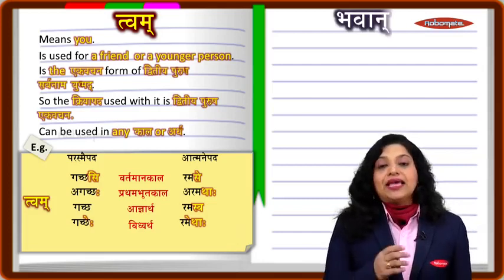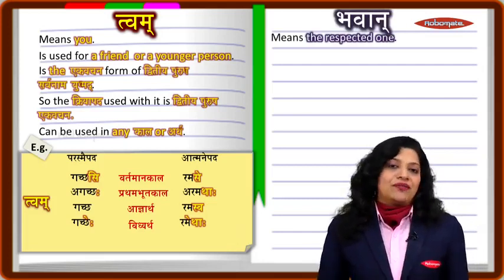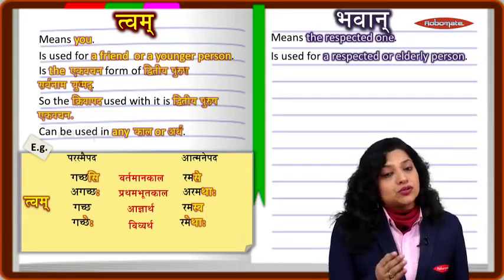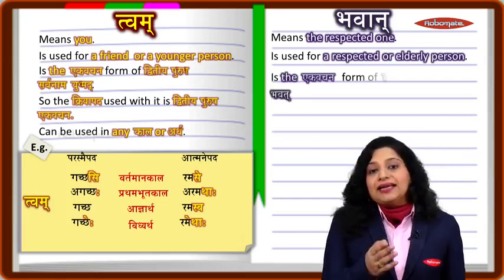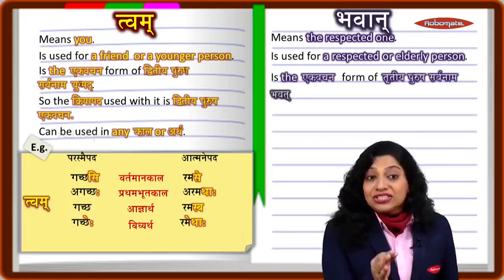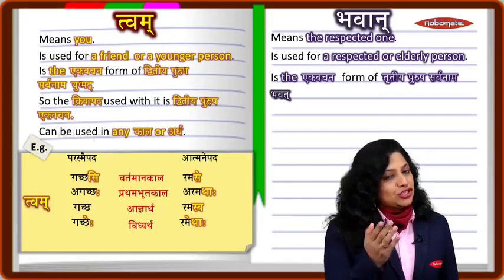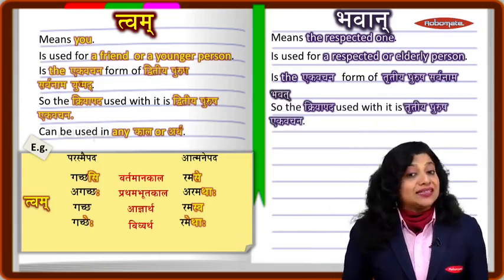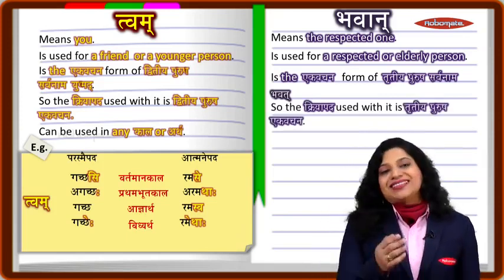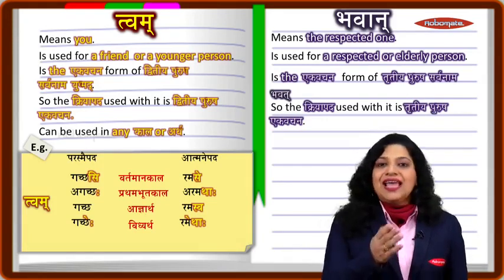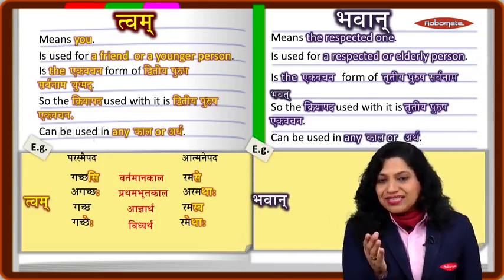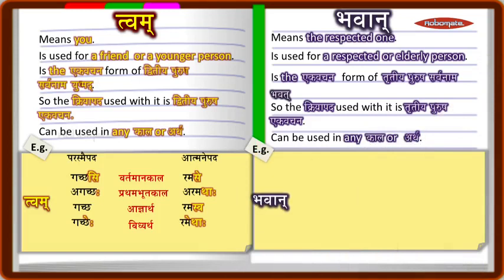'Bhavan' also means 'you' but refers to the respected one. It is used for a person who is respected or older than us. Bhavan is the ekavachana form of the tritya purusha sarvanam 'bhavat.' Because the karta is tritya purusha ekavachana, the kriyapada also has to be tritya purusha. Let's see its usage across different kalas and arthas.